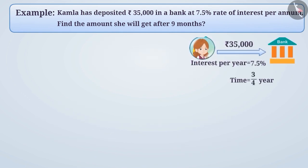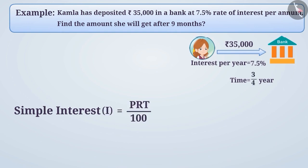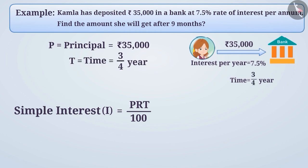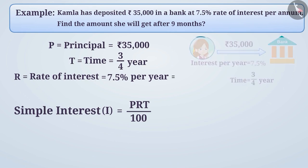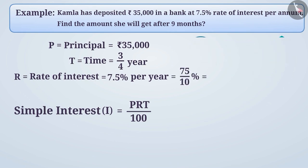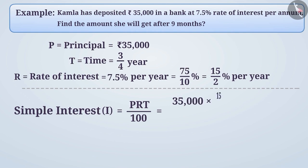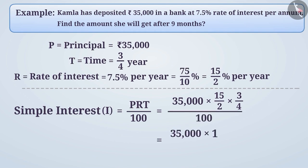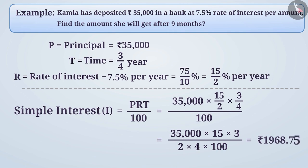Let's now find the simple interest. The formula is I = PRT/100. Here, P = Rs 35,000, T = 3/4 years, and R = 7.5% per year, which is equal to 75/10% per year, or 15/2% per year. Therefore, I = 35,000 × (15/2) × (3/4) / 100, which is equal to 35,000 × 15 × 3 / (2 × 4 × 100).